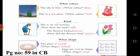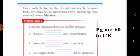Everyone is clear about these examples? Good. Words like five, big, blue, nice, and round describe the nouns. The nouns are books, boys, house, ant, sky, dress, woman, flowers, plate, and egg. These words are known as adjectives.